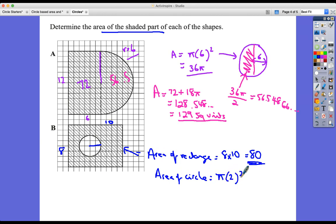What do we need to do to find the area of the shaded part? We take the area of the rectangle and subtract the area of the circle, because we're taking out the area of the circle which is not shaded. So it's going to be 80 minus 4π, or 12.566. So 80 subtract that last answer.